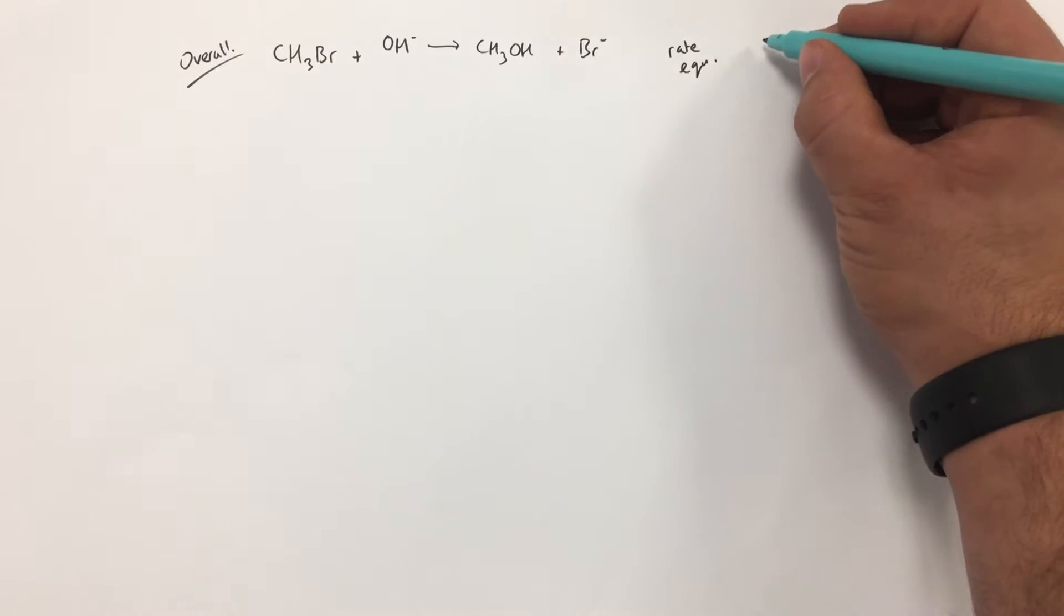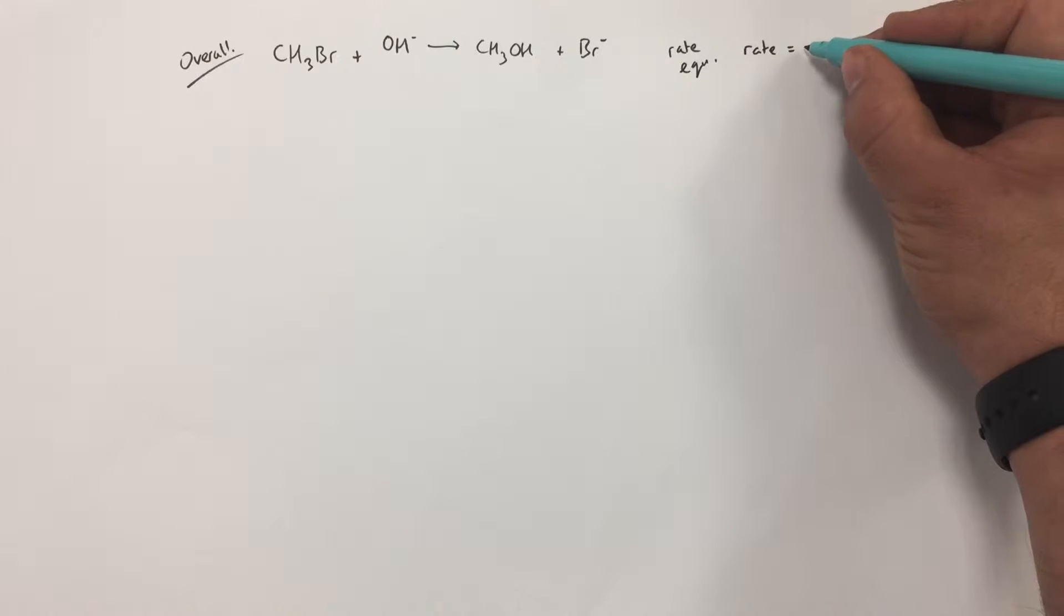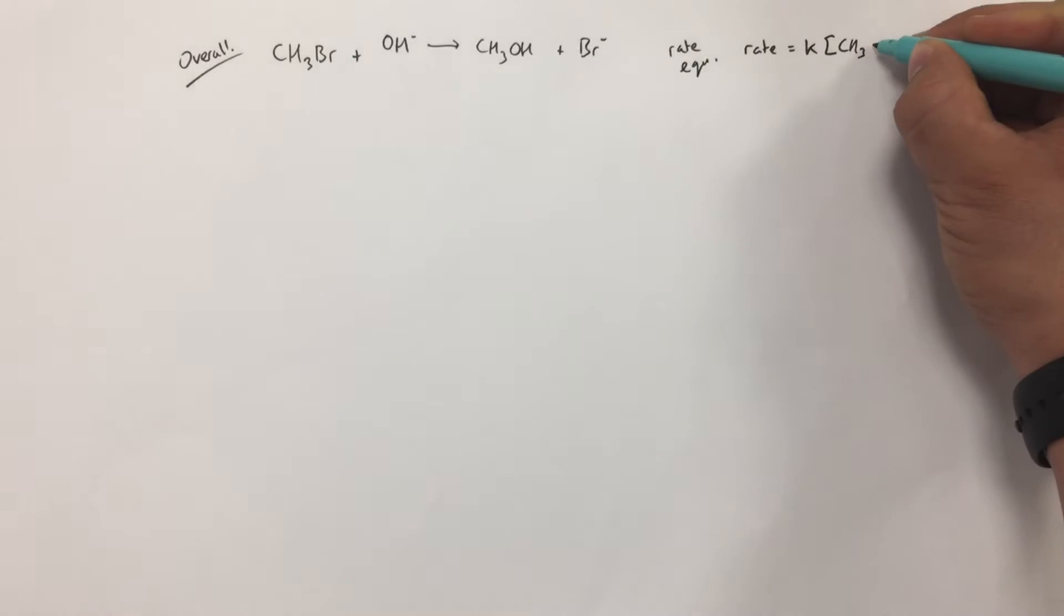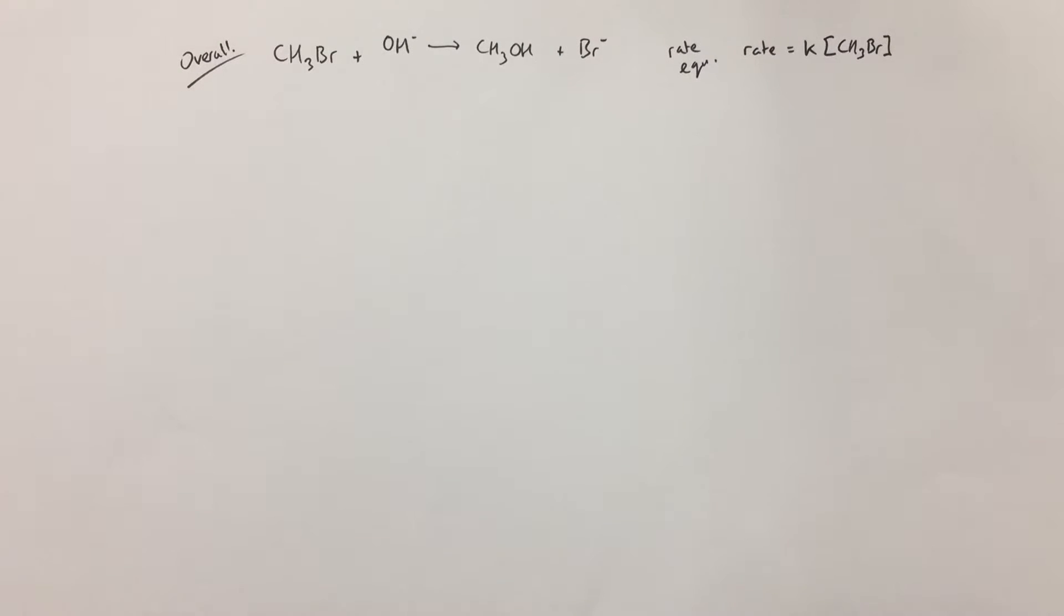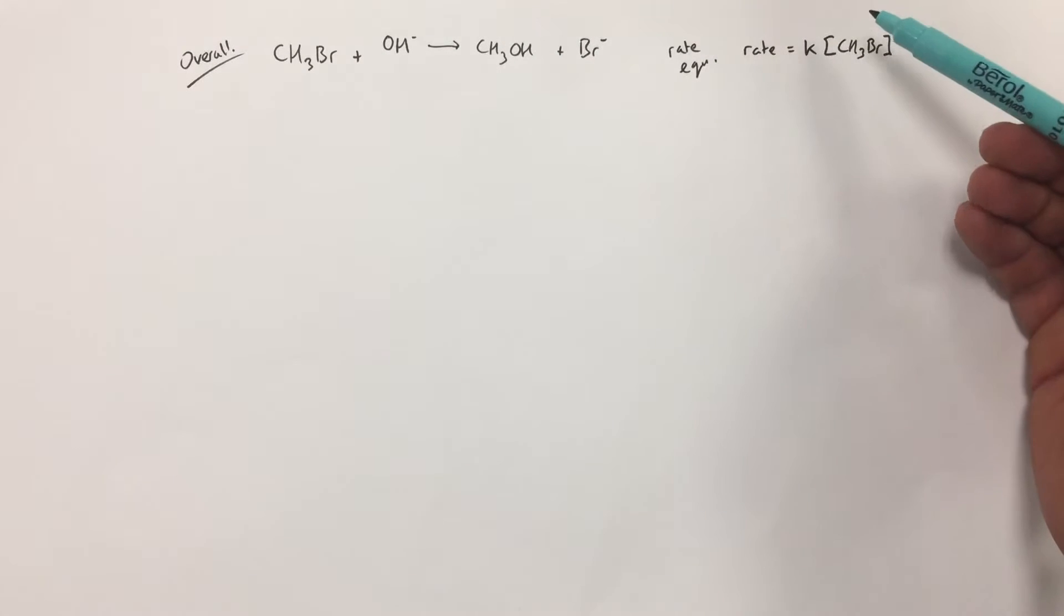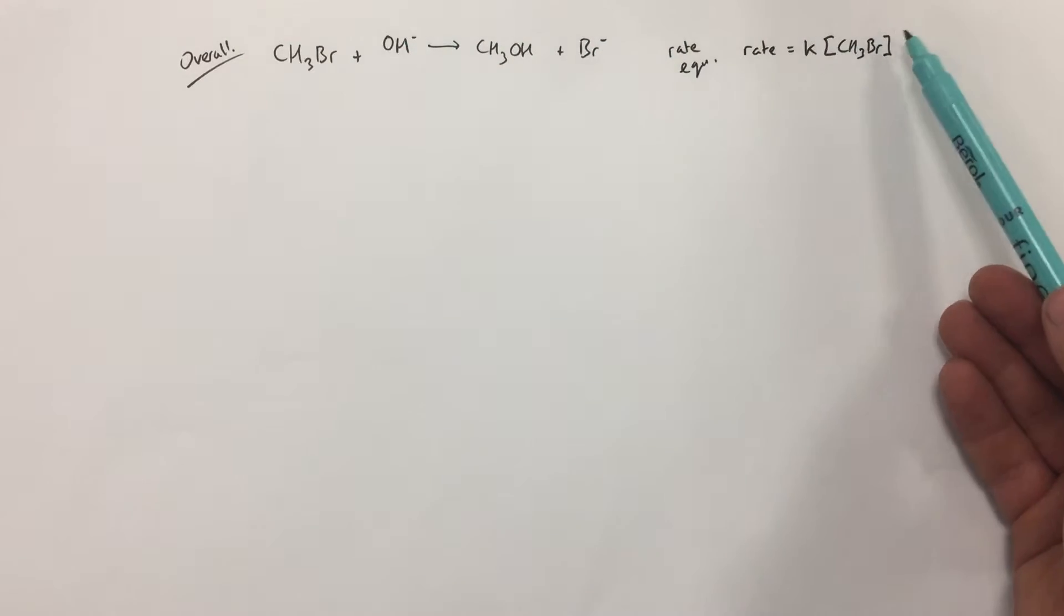Remember, the rate equation can only be determined through experimental data—it can't be predicted. For this reaction, possibly we've done this as part of a previous exam question, but rate is equal to K and then the concentration of bromomethane.